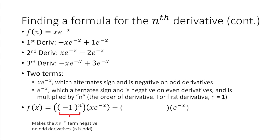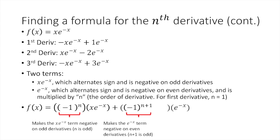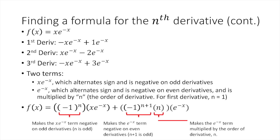My second term, e to the negative x, is negative only on the even derivatives. So I multiply it by negative 1 to the n plus 1. When n is an even number, n plus 1 will be an odd number, and negative 1 to an odd number is negative. I also have to multiply e to the negative x by n, the number of the derivative we're on. Because when I'm on my second derivative and n equals 2, e to the negative x has a 2 in front of it, and that's what the n term is there for.